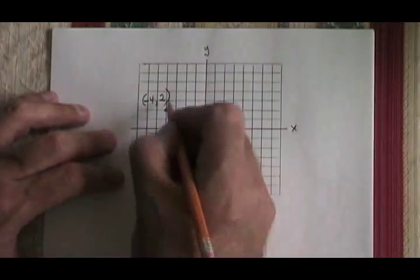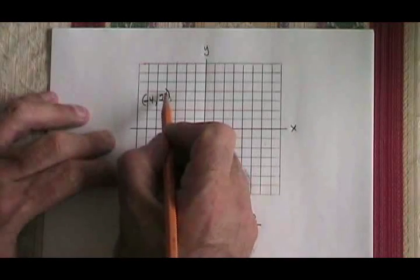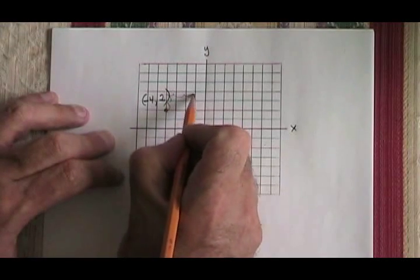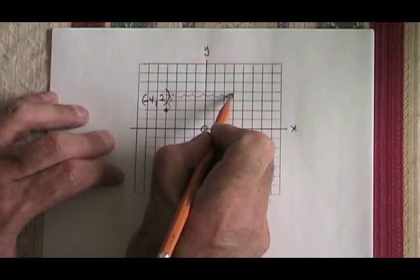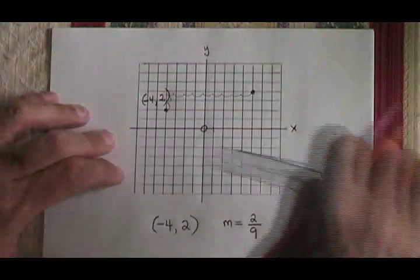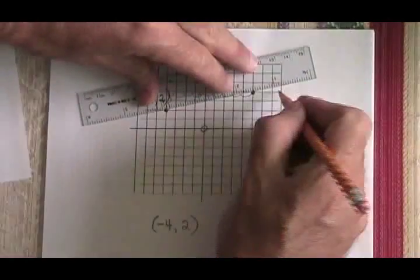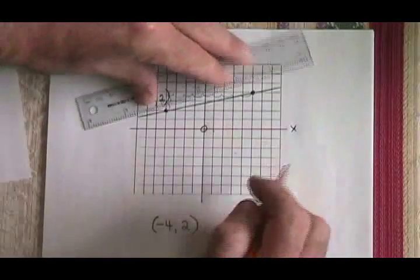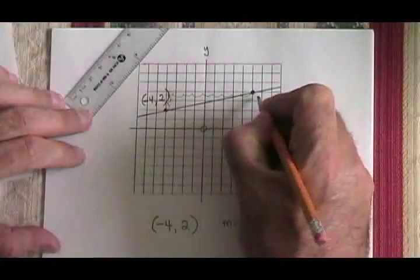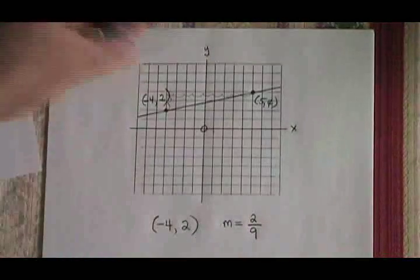Then, I do a rise of 2, which brings me up here. And a run of 9, which brings me all the way over here. I have found the second point. I get my ruler, draw a line through the points, identify the second point, which has coordinates 5, 4. And I have graphed my second line.